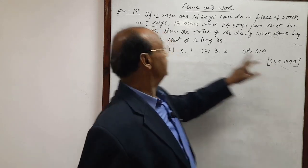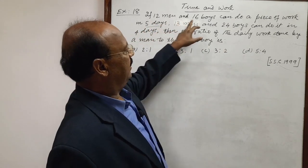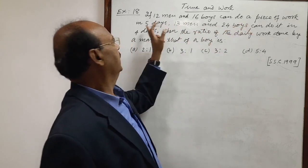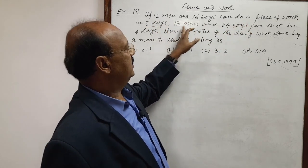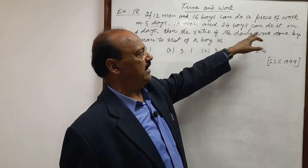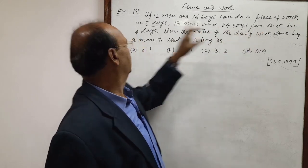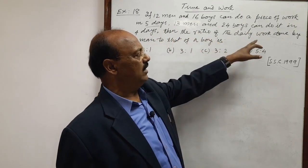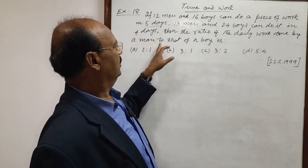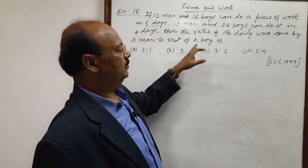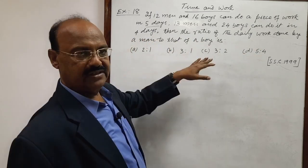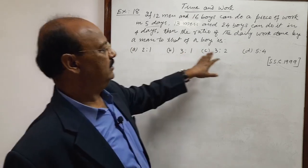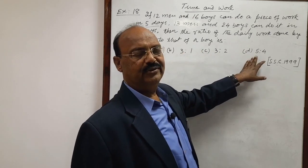The question is: if 12 men and 16 boys can do a piece of work in 5 days, and 13 men and 24 boys can do it in 4 days, then the ratio of the daily work done by a man to that of a boy is — four options are given: 2 is to 1, 3 is to 1, 3 is to 2, and 5 is to 4.